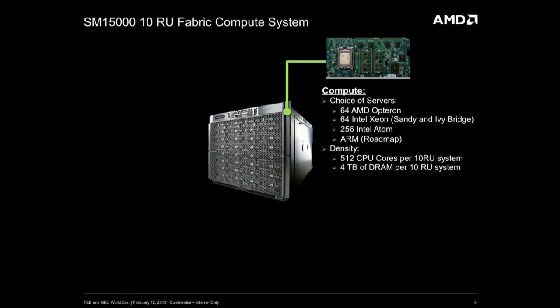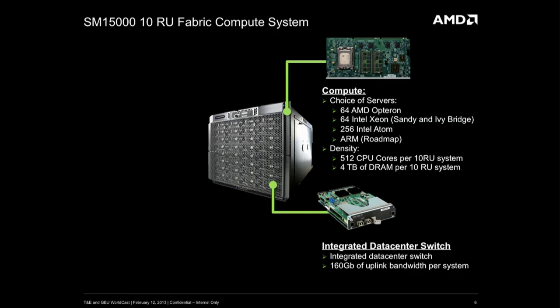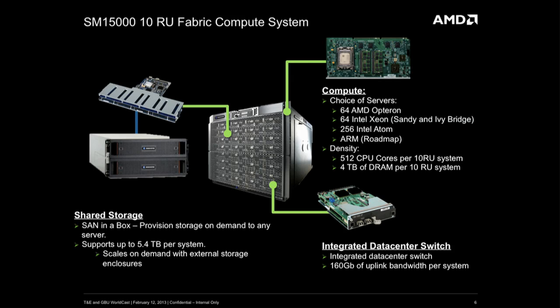Let's go over the system. From the compute side, in a 10RU system you can have 64 AMD Opteron servers, 64 Intel Xeon, or 256 Intel Atom. On our roadmap, we're also introducing ARM processors. That allows you to put 512 CPU cores and 4 terabytes of DRAM in a single 10RU system. From a switching point of view, it gives you integrated data center switching — a data center switch in a box with 160 gigabits per second of uplink bandwidth. And our integrated shared storage is really a SAN in a box — you can provision storage on demand to any server within the system, supporting up to 5.4 petabytes of storage in a single platform.